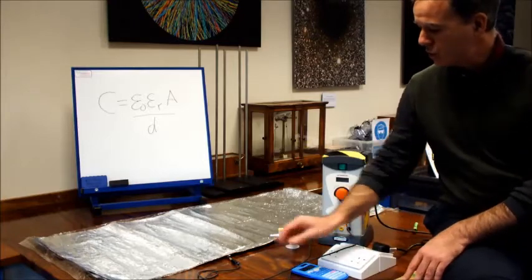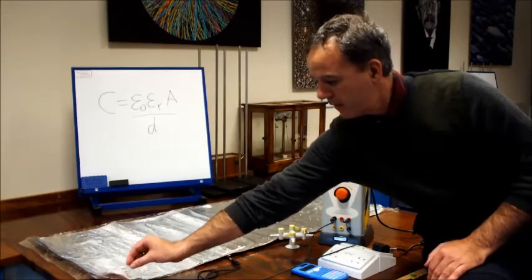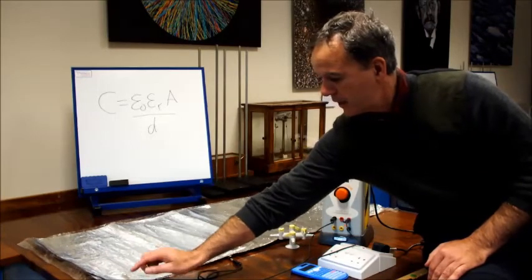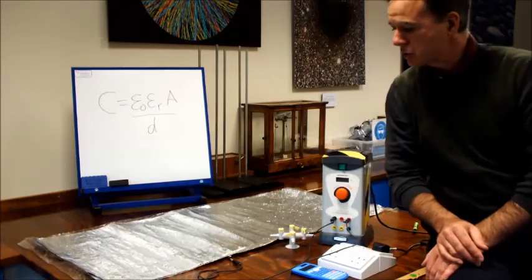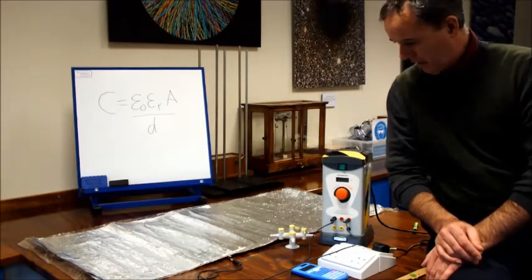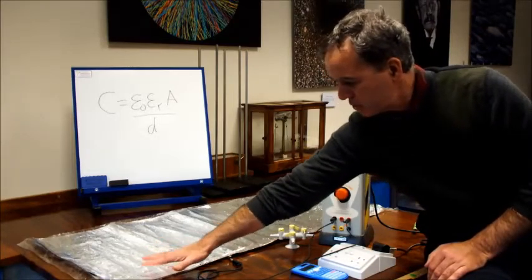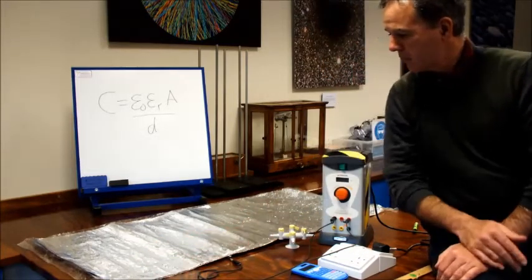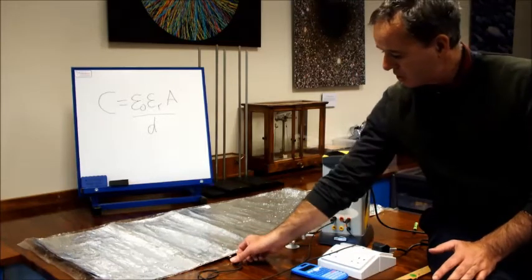It consists of two sheets of aluminum foil—there's one and there's another one under there—separated by a piece of cling film. So it really is a kind of kitchen capacitor this one, and the cling film of course is acting as the dielectric, keeping the two conducting parallel aluminum foil plates apart.